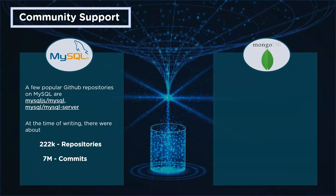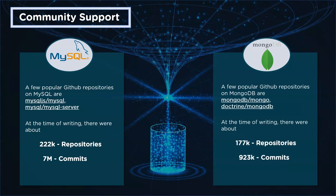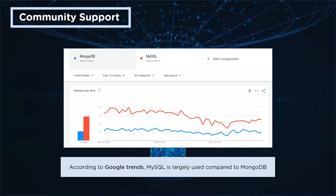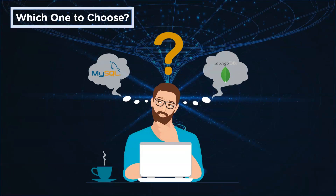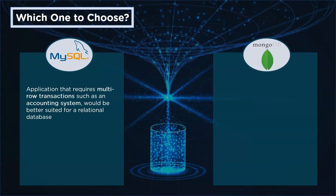Talking about community support, some popular GitHub repositories for MySQL include mysql-js/mysql and mysql-server. At the time of writing, there were about 222,000 repositories on GitHub with 7 million commits for MySQL. For MongoDB, popular repositories include mongodb/mongo and doctrine/mongodb, with about 177,000 repositories and 923,000 commits. According to Google Trends, MySQL is largely used compared to MongoDB.